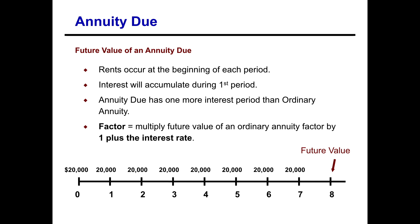In addition, we're going to have to multiply the future value of an ordinary annuity factor by one plus the interest rate. That's because we don't have a table for the future value of annuity due, and we'll see what we need to do with that here in just a second with an example.